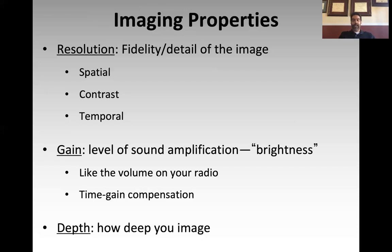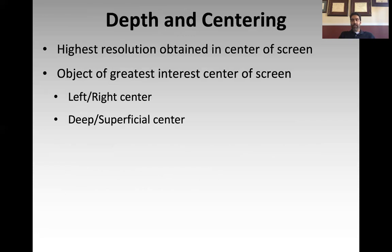And finally, depth — depth refers to how deep you are imaging. The thing to remember is that the highest resolution of imaging on the machines we have is going to be of the object that is dead center on the screen — both up-down and left-right dead center. So when you're scanning, you want to place the object of greatest interest in the center of the screen. The left-right centering is accomplished by sliding the probe along the axis, and the deep-superficial centering is accomplished by adjusting your depth setting on the machine. When we talk about individual ultrasonographic modalities, we'll discuss where to center your imaging based on what you're looking at.